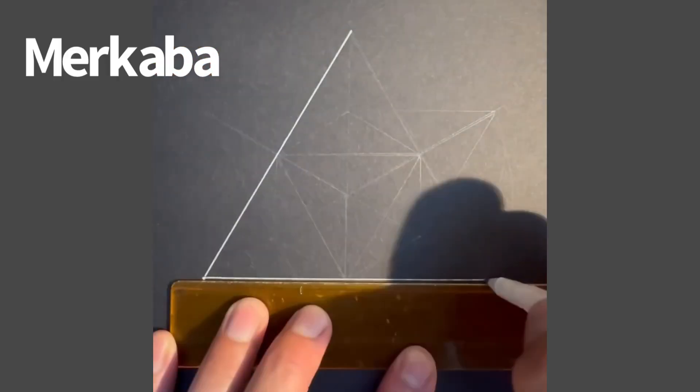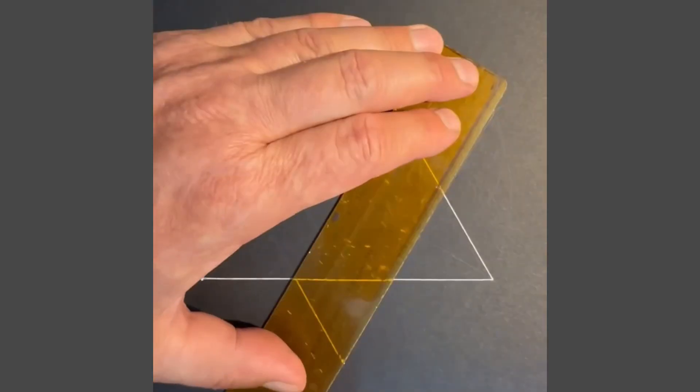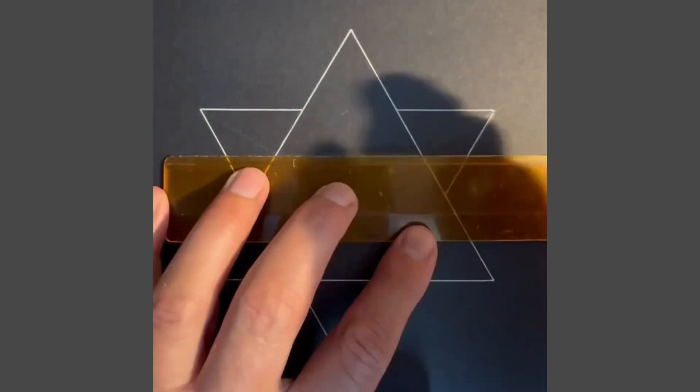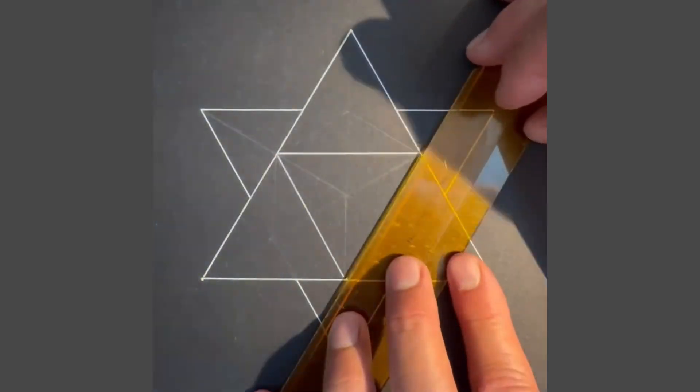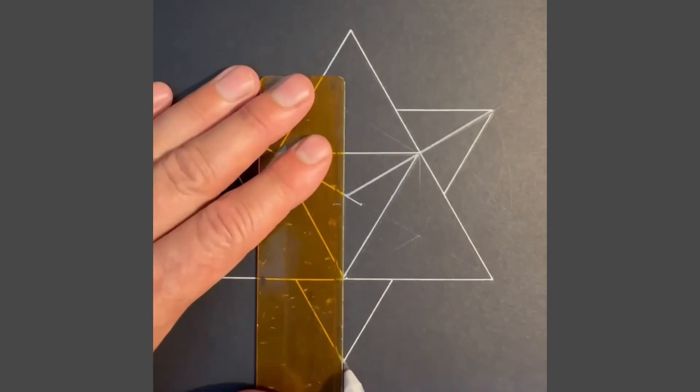The Merkaba. Start with a triangle, then draw another triangle the same size behind it. Once you've done this, draw a smaller triangle in the center of the first triangle. Then connect the center point to the corners.